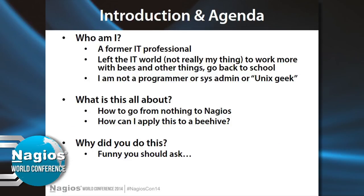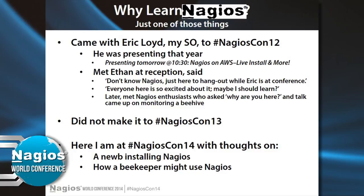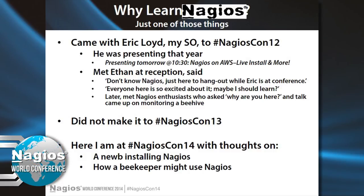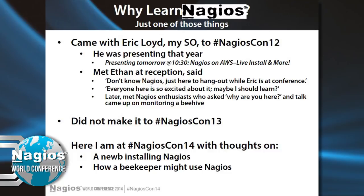So why did I decide to do this? I came to the Nagios Conference 2012 with my significant other, Eric Lloyd, who's right here — and I want to give a shout-out to his 10:30 talk tomorrow, so go to that. I met Ethan at the reception in 2012, and he asked why I was there. I said I was just there to hang out with Eric, but everyone was so enthusiastic about Nagios. I couldn't believe it, and I said maybe it'd be fun to learn. And later, when people found out I was a beekeeper, the discussion turned to how we could use Nagios for a beehive. I didn't make it to last year's conference, but here I am now.